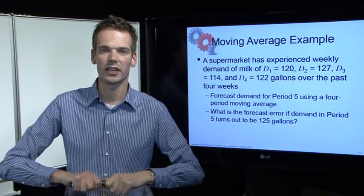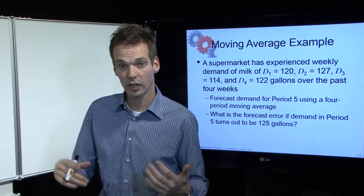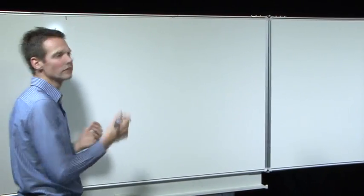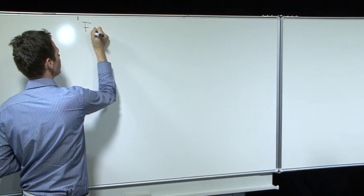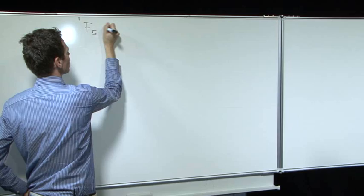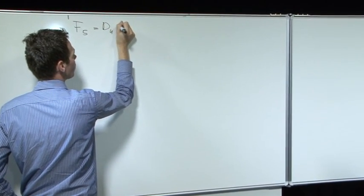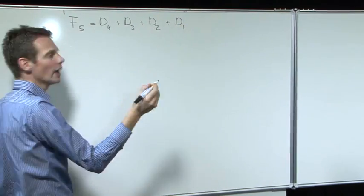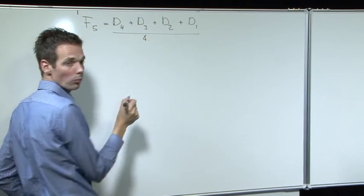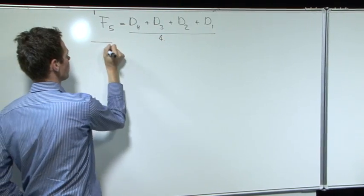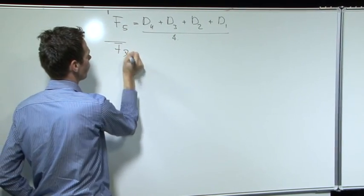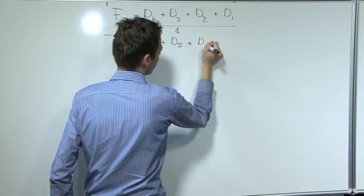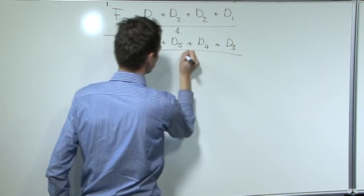The moving average, as it is a rather simple method, we write it on the whiteboard. If we want to calculate the forecast for period 5, then we could take the demand for 4 plus demand 3, demand 2, and demand 1, and this all we divide by 4. If we want to calculate the forecast for period 7, that is demand 6 plus demand 5 plus demand 4 plus demand 3 divided by 4.